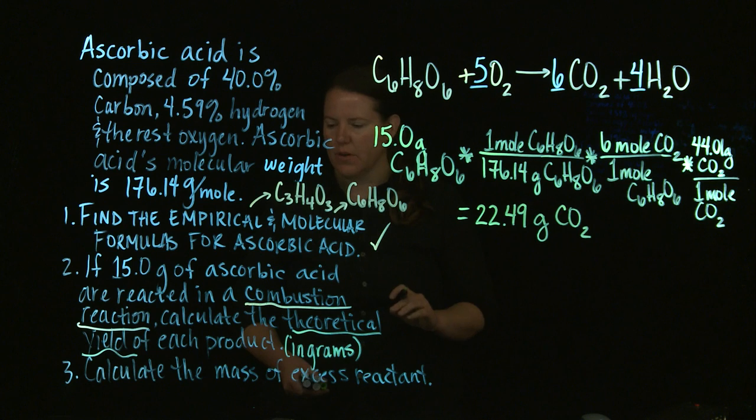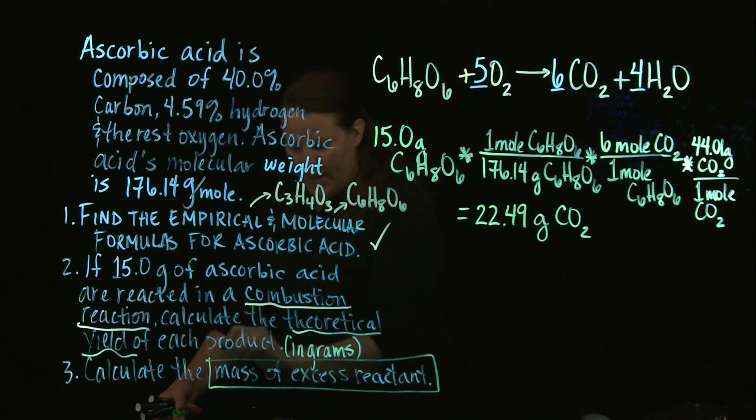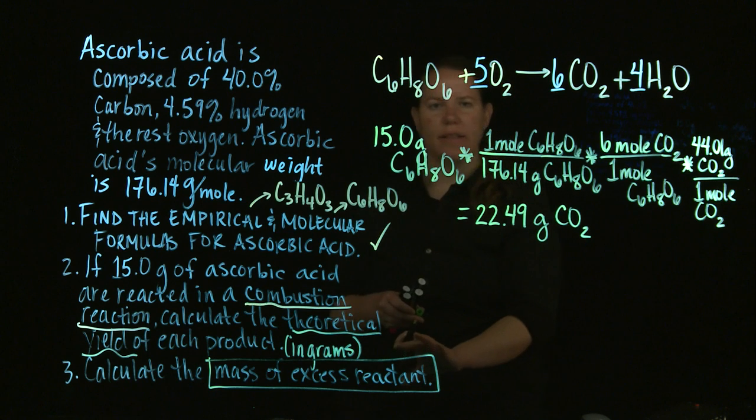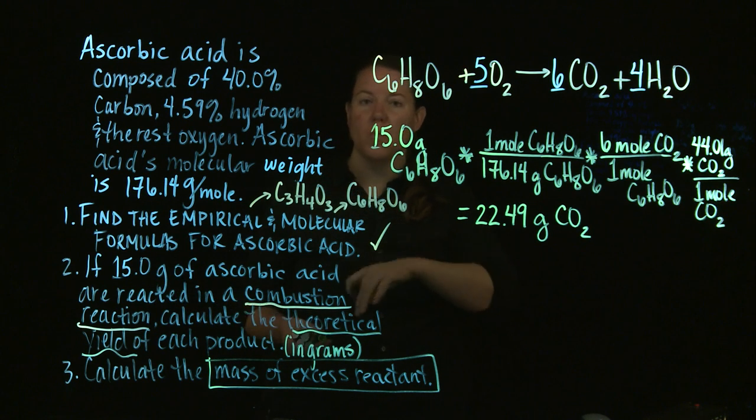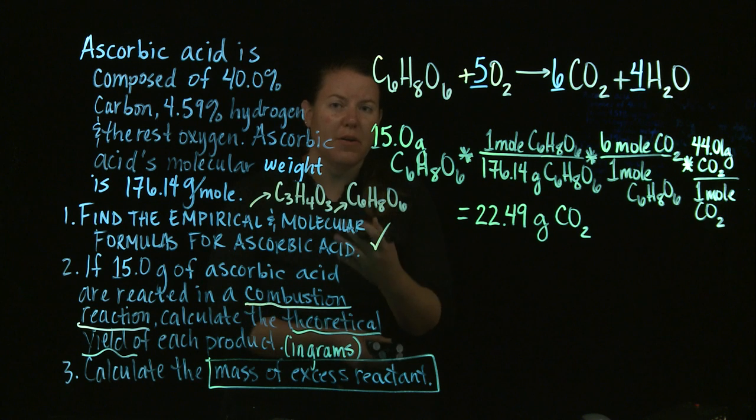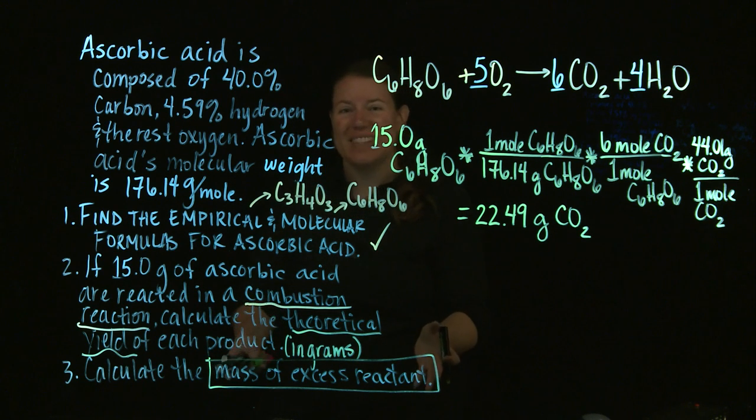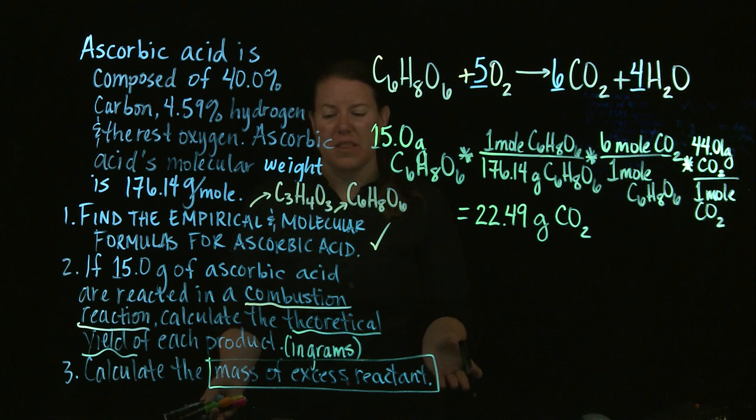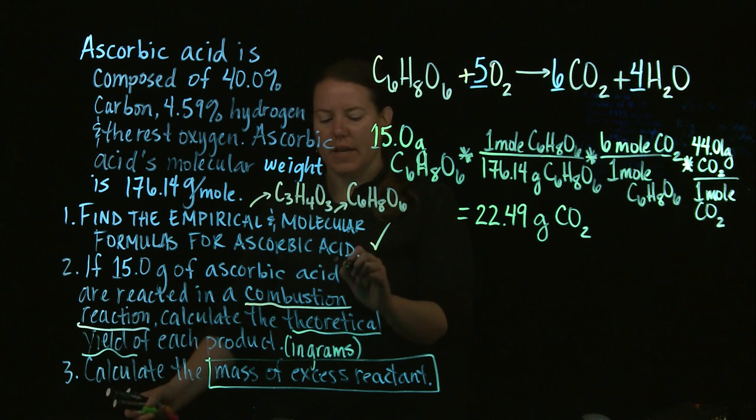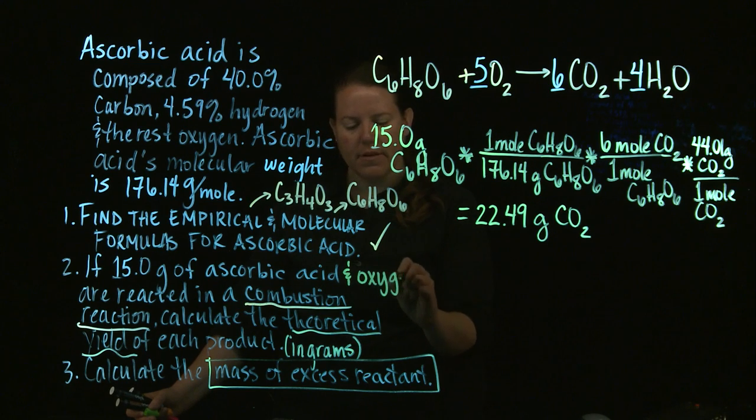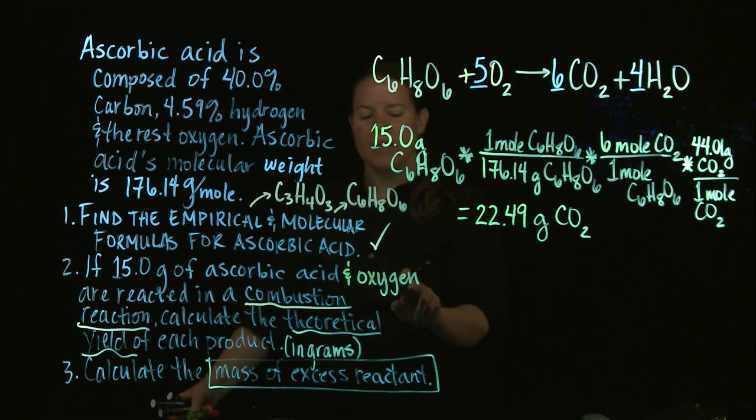Now what's really interesting here is that I just realized something. I realized that this part of the problem asked for the mass of excess reactant. Well, you can't calculate that if you did what we just assumed, right? So what we had here is we had 15 grams only of one of the reactants. If you only have an amount of one of the reactants, you assume the other one is in excess so much that we don't care. So there's no way to calculate the mass of that. The only way I could go on to this next step of calculating the mass of the excess reactant is if we change this a little bit and we say if 15 grams of ascorbic acid and oxygen are reacted in a combustion reaction, then calculate the theoretical yield of each product.